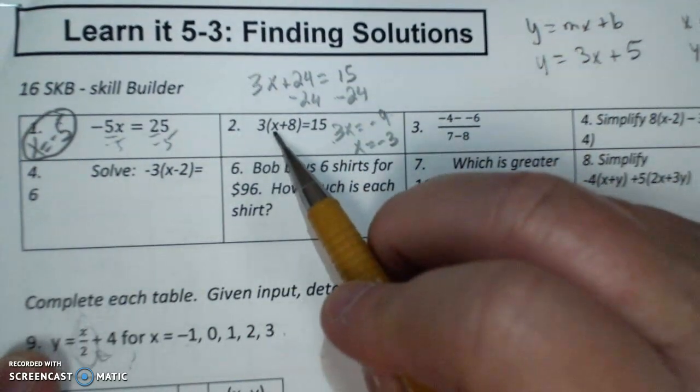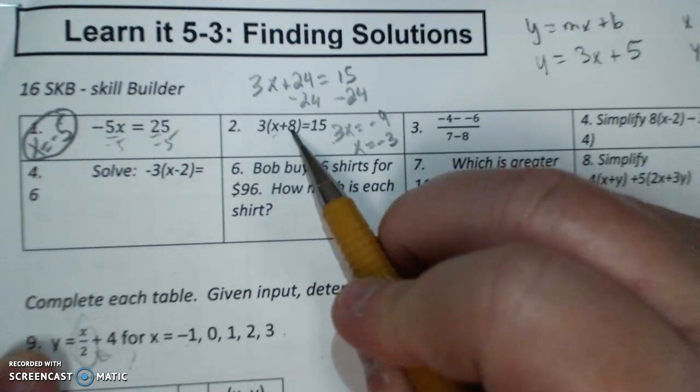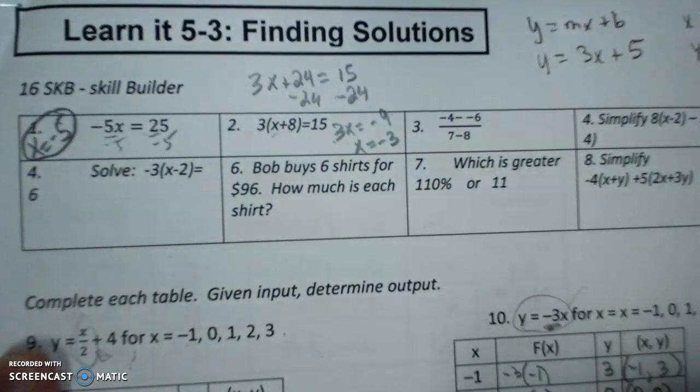If I plug in a negative 3, negative 3 plus 8 is 5. 5 times 3 is 15.